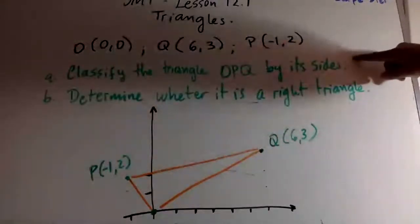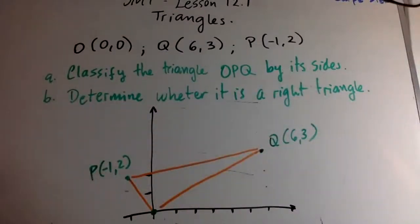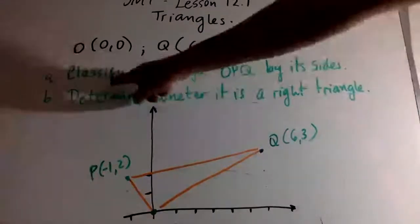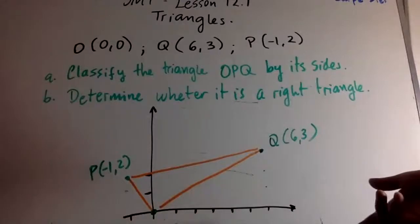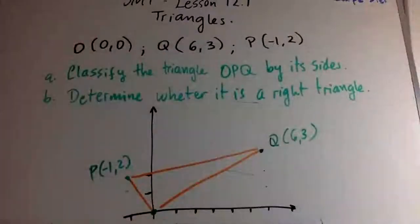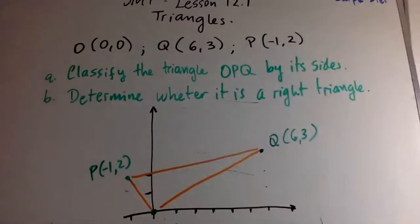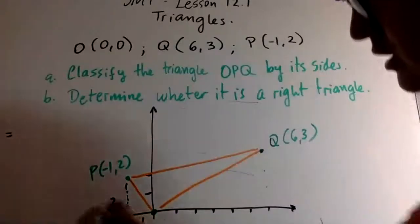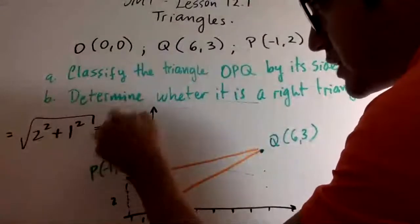We draw the triangle. To classify by sides, we cannot just trust the visuals — we need to use the coordinate plane and the distance formula. For side PO: the horizontal distance is 1 and vertical is 2, so PO = √(2² + 1²) = √5.